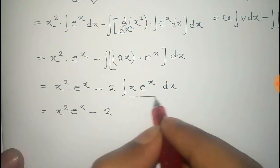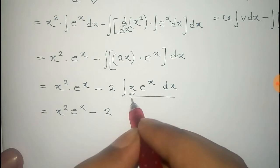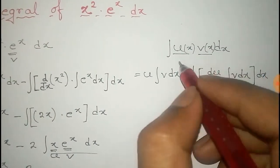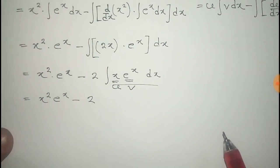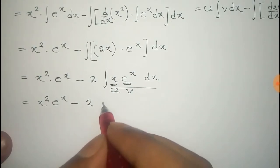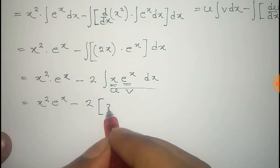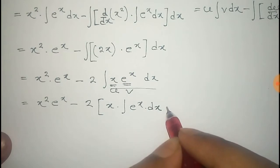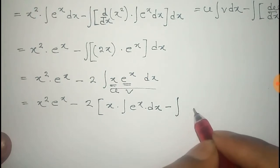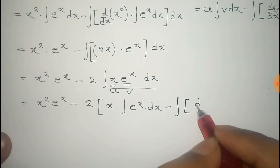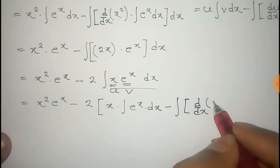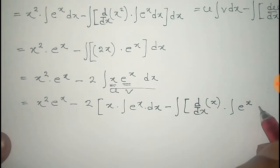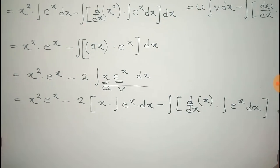To find the value of this integral, we take x as u and e to the power x as v, and apply the same integration by parts formula. Applying the formula we get: x into the integral of e to the power x, minus the total integral of the derivative of x into the integral of e to the power x dx.